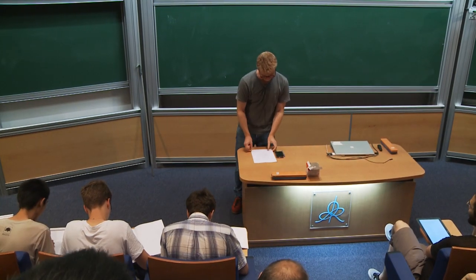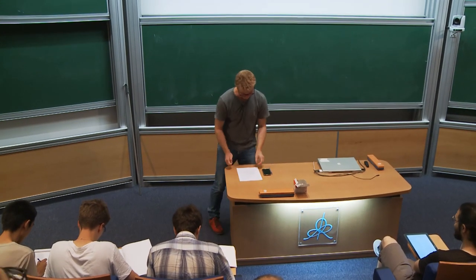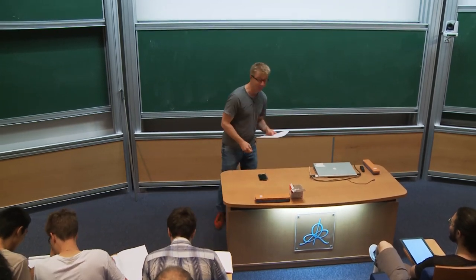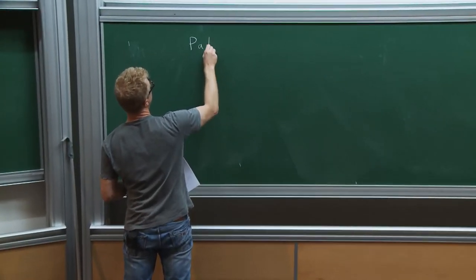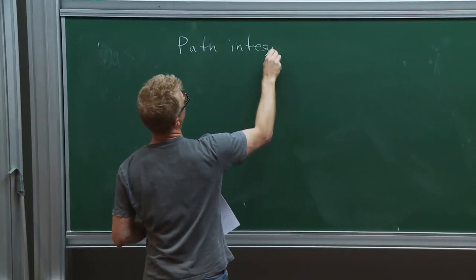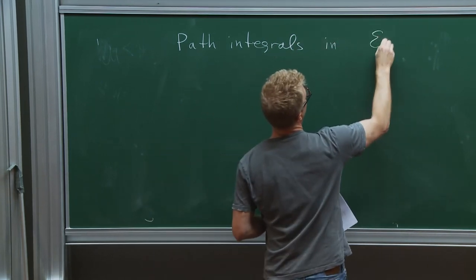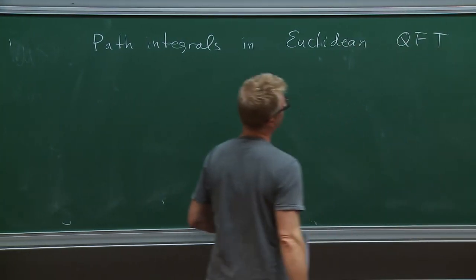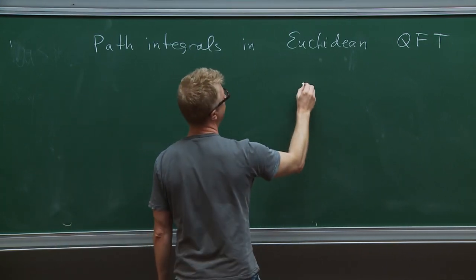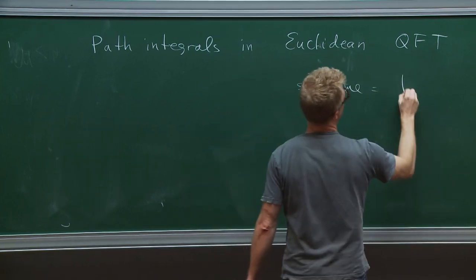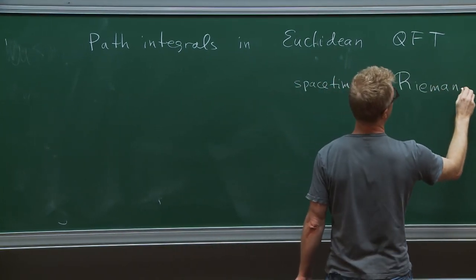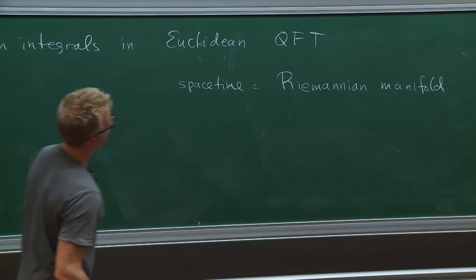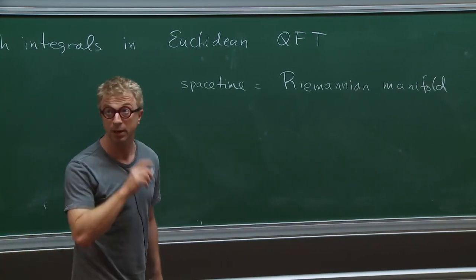I was given a task to lecture on introduction to instantons, so I'll try to start with something pretty elementary. We will be looking at path integrals in Euclidean quantum field theory, which means that the spacetime will be a Riemannian manifold, but the space of fields may be complexified.